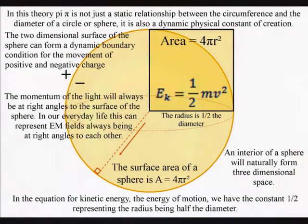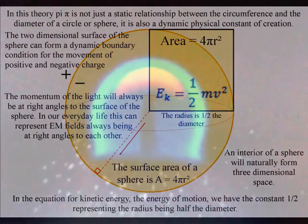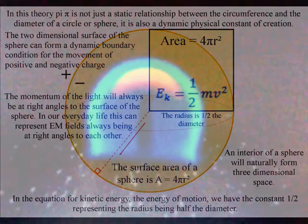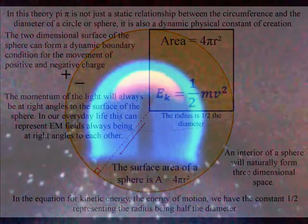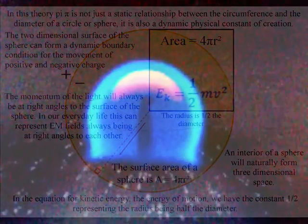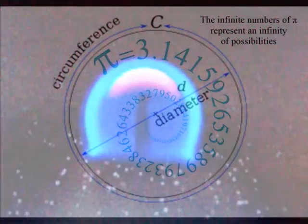The candle flame naturally forms a sphere. The interior of a sphere will form three-dimensional space with the information that we call pi—the ratio of a circle's circumference to its diameter. We see here that the mathematical constant pi is formed by a geometrical process.